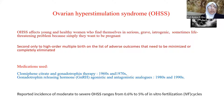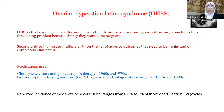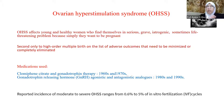OHSS is considered second in the list — after multiple pregnancy — as an adverse outcome that needs to be minimized or completely eliminated. The medications used include clomiphene citrate, introduced in 1960; gonadotrophin therapy, introduced in 1970; gonadotrophin-releasing hormone agonist, introduced in 1980; and antagonist analog, introduced in 1990. The reported incidence of moderate to severe OHSS ranges from 0.6 to 5% of IVF cycles, with some reports reaching up to 9% of IVF cycles.